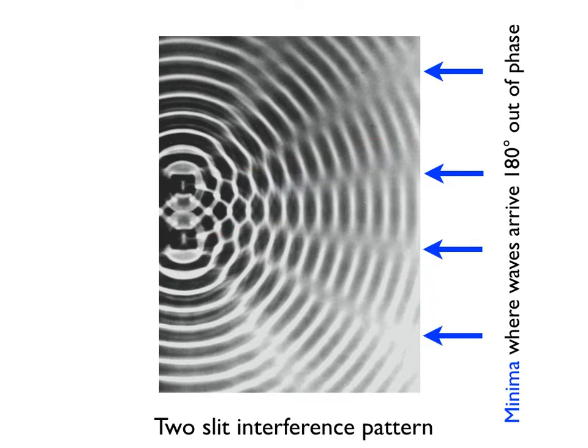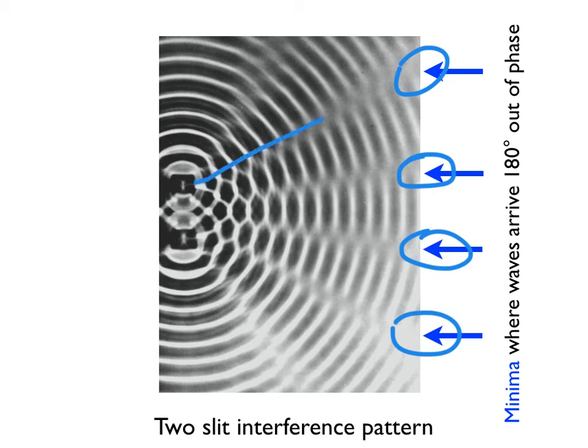And we also know that in the places where the waves arrive out of phase we'll get cancellations or minima, so here are the minima here, here, here, here, and here.